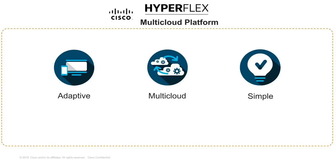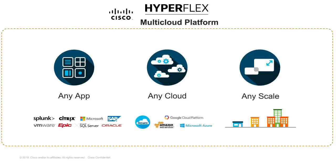Any application: we're continuing to push CVDs — if a workload is virtualized, it's a good candidate for HyperFlex. Adding Hyper-V and container support means more use cases and applications. Any cloud: HyperFlex is the private cloud on-ramp into various public clouds using all the tooling we have. Any scale: start small with a cluster in a remote site, use the same platform for your core data center running mission-critical workloads — HyperFlex scales from the smallest to the largest deployments.